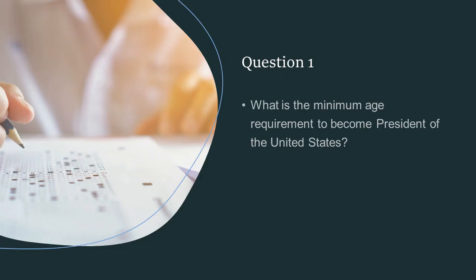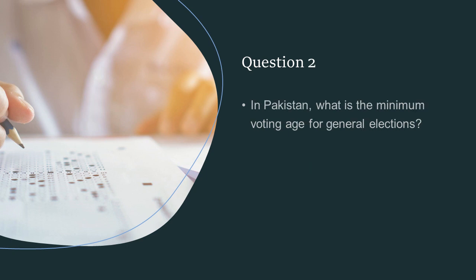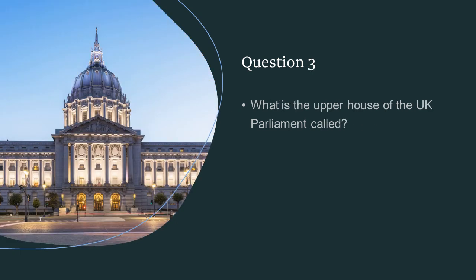Question 1: What is the minimum age requirement to become President of the United States? 35. In Pakistan, what is the minimum voting age for general elections? 18 years.